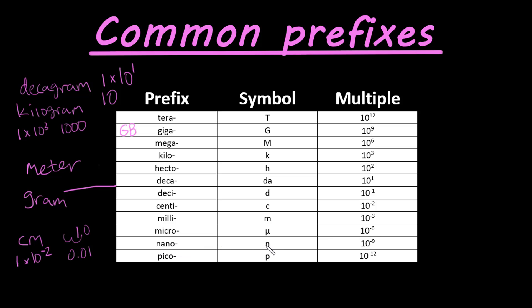Nano, symbol N, multiple 10 to the negative ninth. Pico, symbol is P, and the multiple is 10 to the negative twelfth.